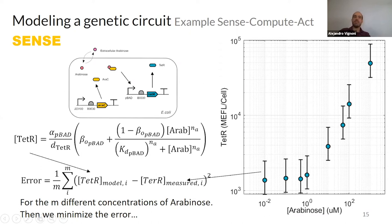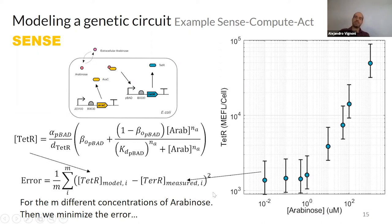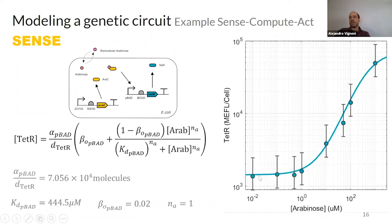By minimizing this error through optimization, we get the parameter values that make the model output most similar to the measurements. This can be done with any optimization software — in MATLAB, the curve fitting toolbox is easy to use: you write your equation, input the arabinose concentrations and measured data, and get parameter estimates with confidence intervals.